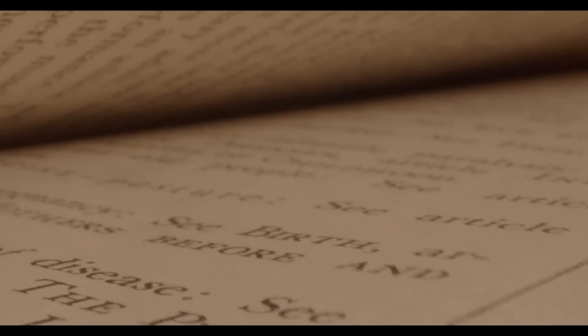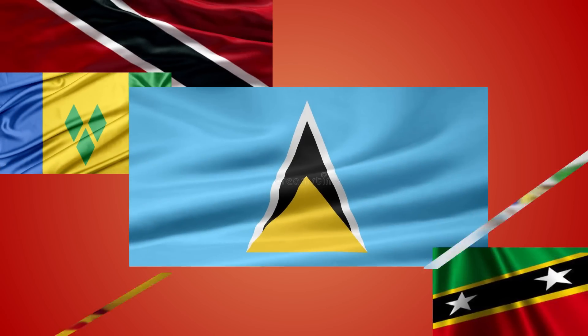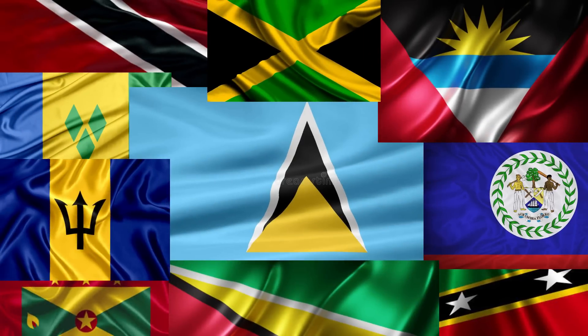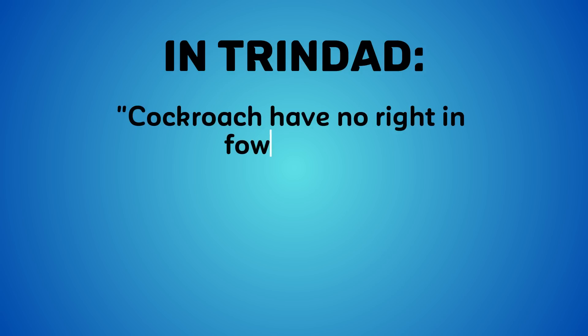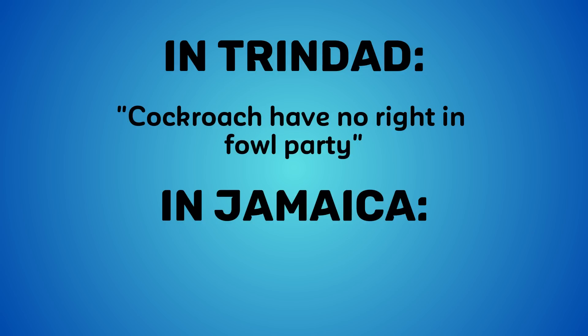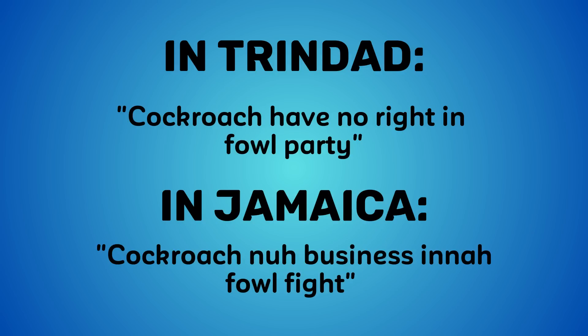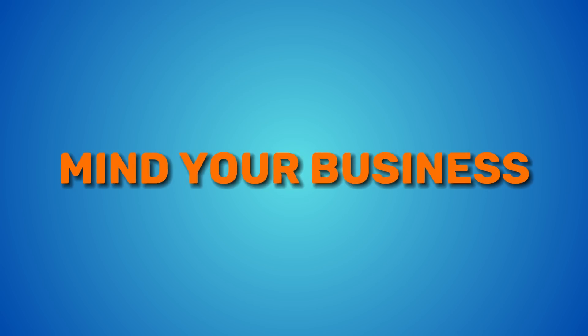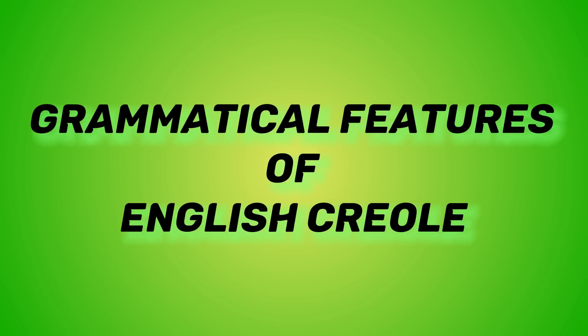Even though Caribbean countries may use different words at times, Caribbean Creole has a common structure regardless of which Caribbean island you're on. That is why Caribbean people are able to understand Creole whether it is Trinidadian Creole, Guyanese Creole, or simply whichever Caribbean country you're from. For example, in Trinidad they say 'cockroach have no right in foul party,' while in Jamaica they say 'cockroach no business in a foul fight.' In both cases, we mean 'mind your business.' Both sentences look and sound fairly similar, and that's all due to the grammatical features of Caribbean English Creole.